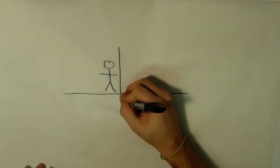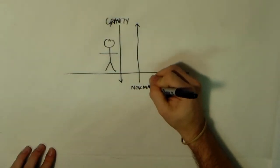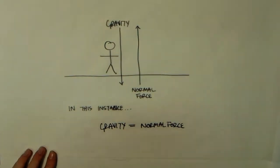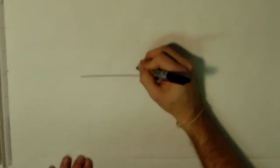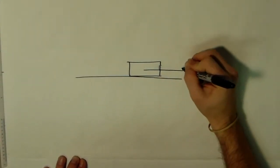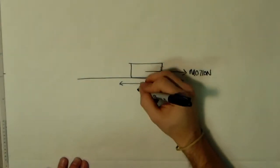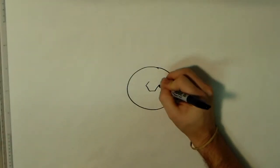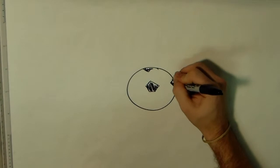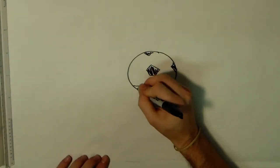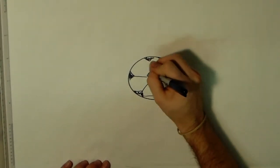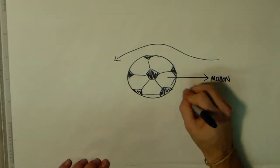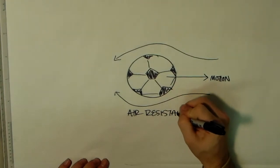The normal force is the support force exerted upon an object in contact with another stable object. On occasions, a normal force is exerted horizontally between two objects in contact with each other. The friction force is the force exerted by a surface as an object moves across it or makes an effort to move across it, with at least two types: sliding and static friction. Air resistance is a special type of friction force that acts upon objects as they travel through the air, often opposing the motion of an object. It is most noticeable for objects that travel at high speeds, like a soccer ball, or for objects with large surface areas.